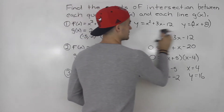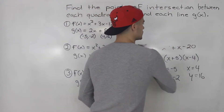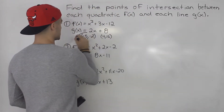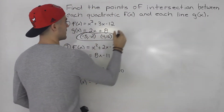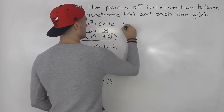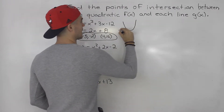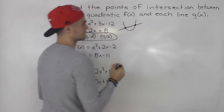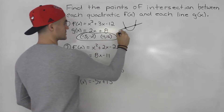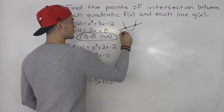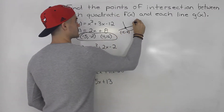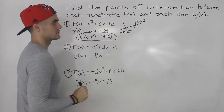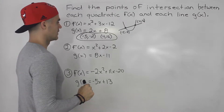Visually, this looks like a parabola with a line going through it, intersecting at two points. This point here is negative 5, negative 2, and this point here is 4, 16.